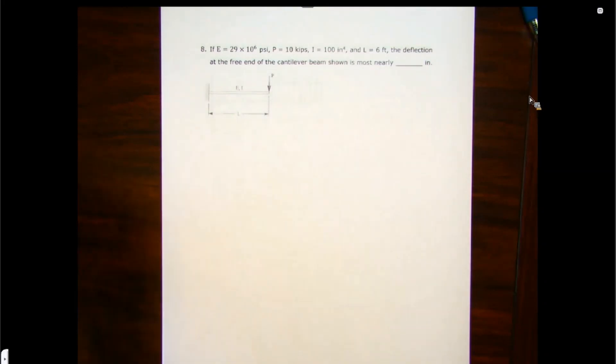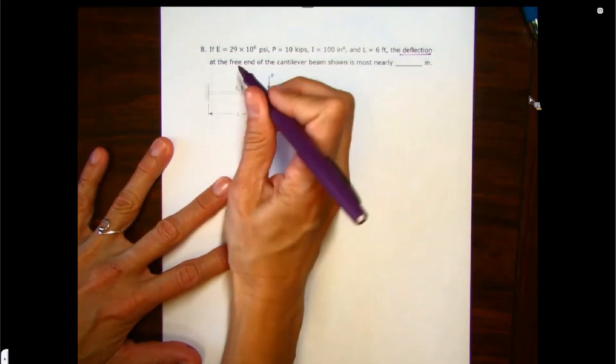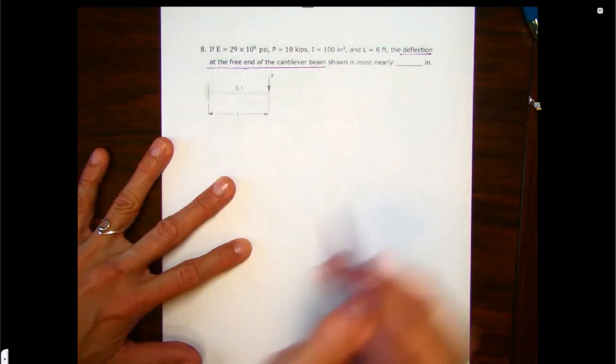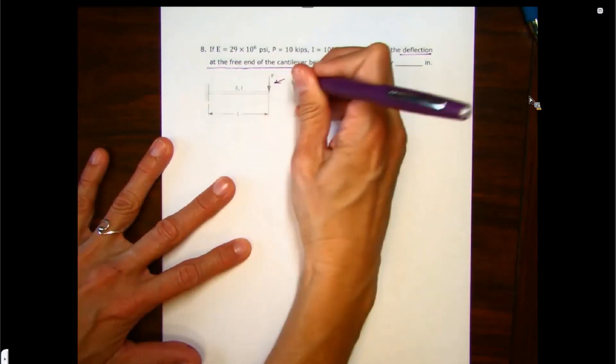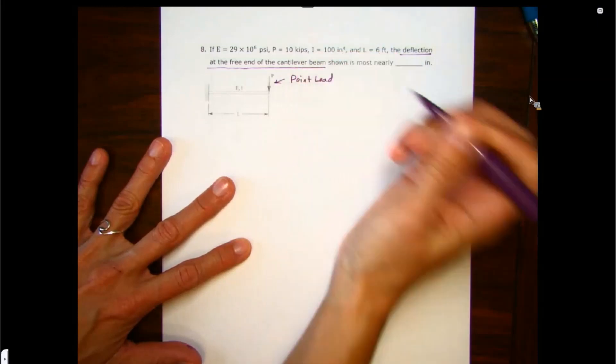So when we are talking, we're away from trusses now, we're on to beams. What this is asking us for is deflection at the free end of a cantilever beam. And when we see that, that's a point load, right? We recognize that as a point load.